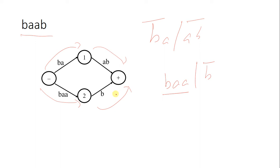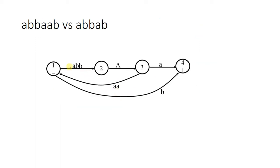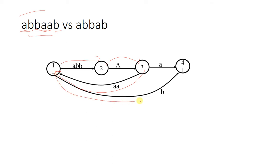Next example: this string will be accepted and this one will not. For the accepted string, I read three letters and move here, then I take a null transition — for a null transition you can move freely — so I move to state 3 without reading any input. Then after those three letters I read the double A, moving from state 3 back to state 1, then I read B to move to state 4, which is the accepting state.